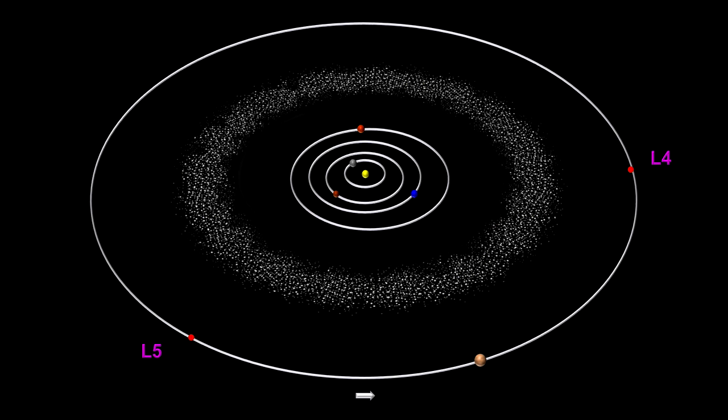134 years later, between 1906 and 1908, four such minor planets were found around Jupiter's L4 and L5 Lagrange points.